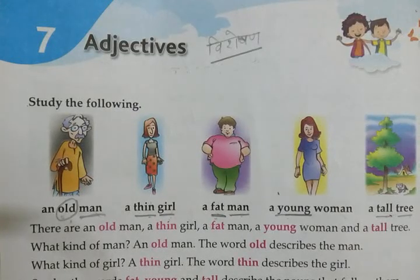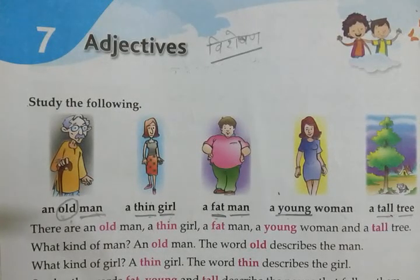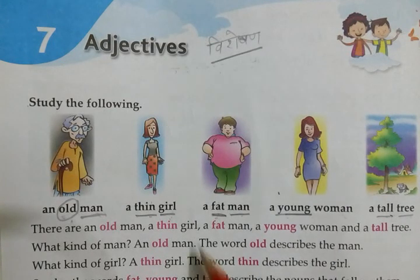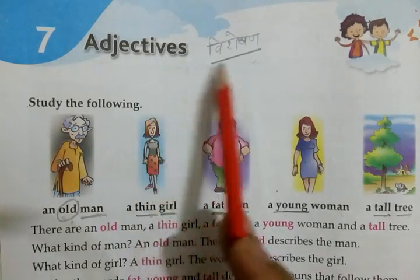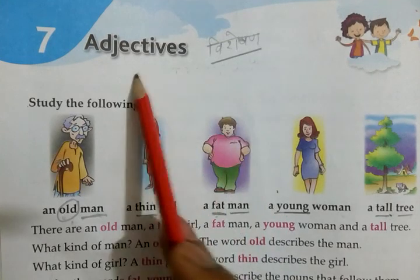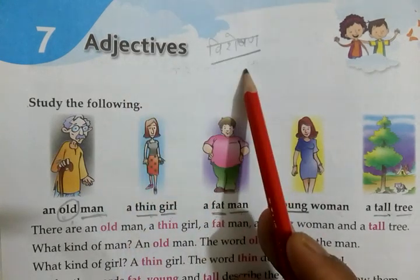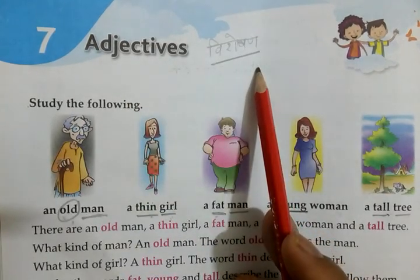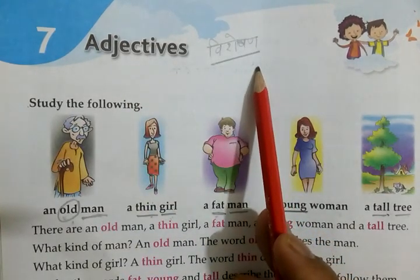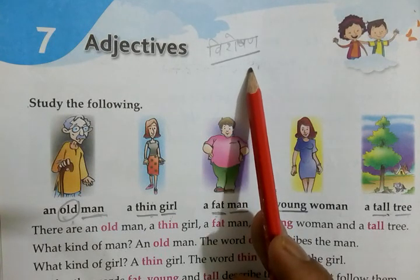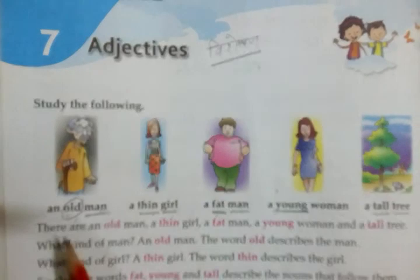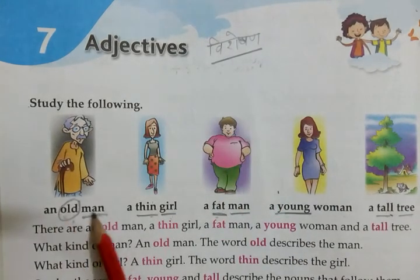Hello students, hope you are fine. In today's class we will study English grammar topic: adjectives. What is an adjective? Adjective means VISHESHAR — VISHESHTA BATANE VALE SABD (words that describe qualities).